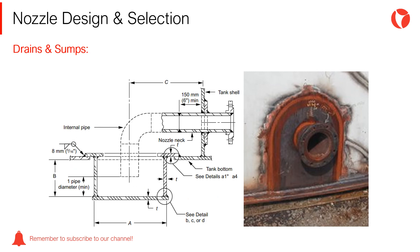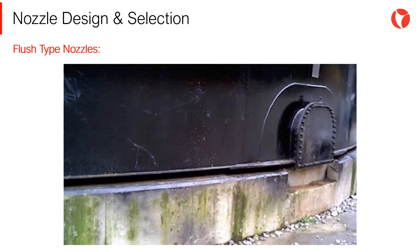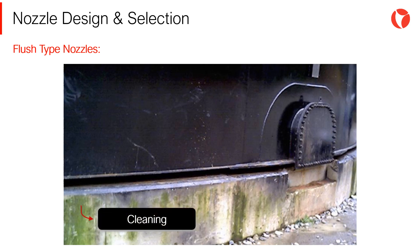Storage tanks must have at least one sludge nozzle for drainage, which may be a flush type directed to a sump or under the tank. Sumps and bottom nozzles should be designed paying special attention to the filling and compacting of the terrain, in order to prevent tank settlements. Flush-type nozzles are designed to allow the full drainage of the stored fluid; their design and location is such that the lower part of the nozzle becomes part of the shell, in order to fit in the shell bottom joint. They are mainly used as cleaning nozzles located in the shell bottom joint, but can also be used as process nozzles.